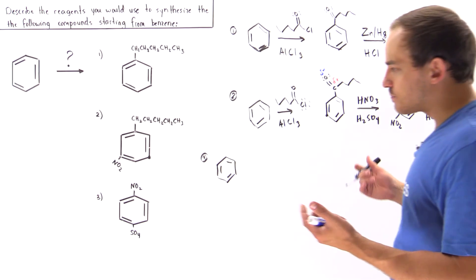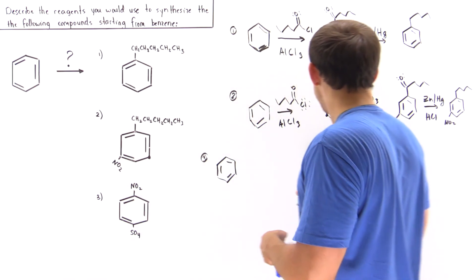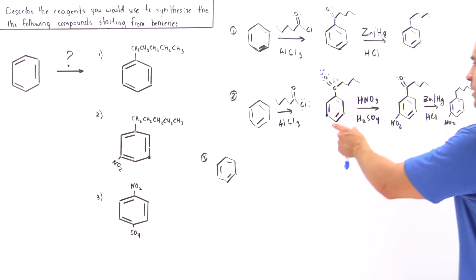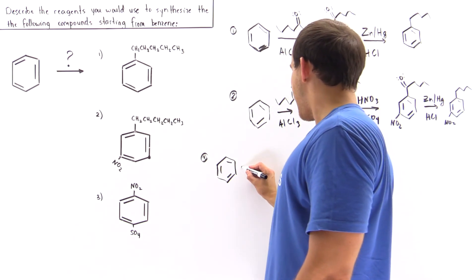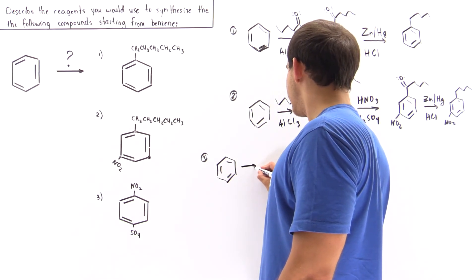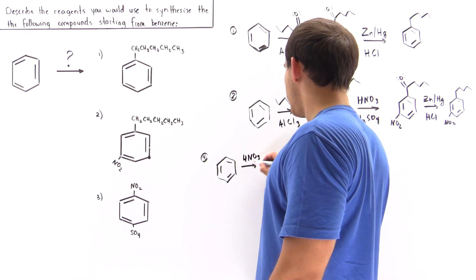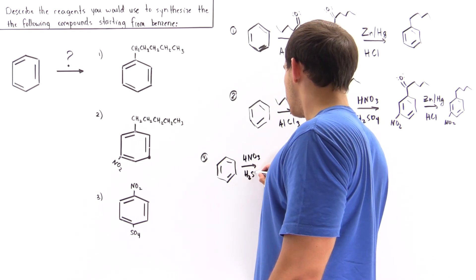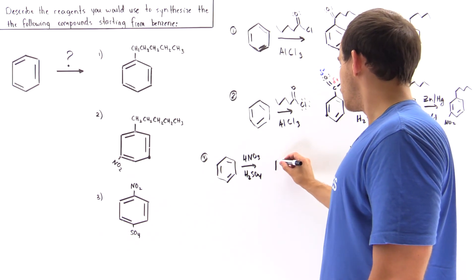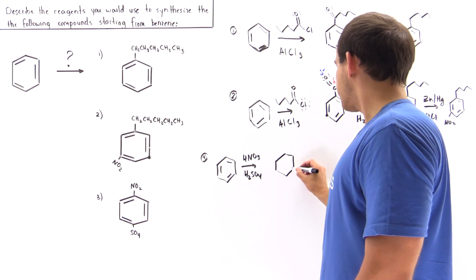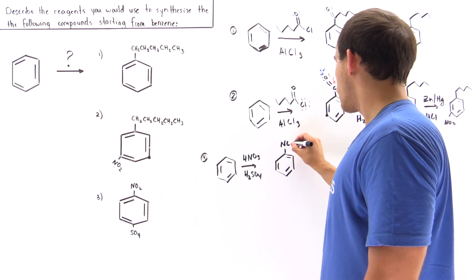In the first step, let's form the nitro group the same way we placed it in product two. We take nitric acid (HNO3), mix it with our catalyst H2SO4, and produce a benzene ring containing our nitro group.